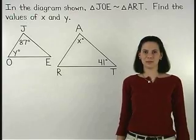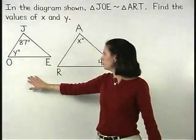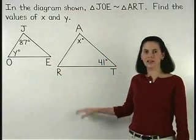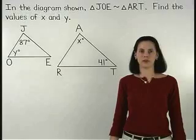In this example, we're given that triangle J-O-E is similar to triangle A-R-T, and we're asked to find the values of X and Y.